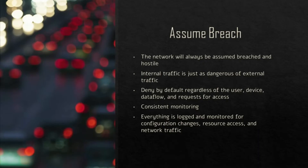Number two is assume breach. Within a zero-trust network, the network will always be assumed to be hostile and compromised, and internal traffic is considered just as dangerous as external traffic. This means that everything will be operated under the assumption that there is an adversary currently in the network—deny by default, regardless of the user, device, data flow, and requests for access.